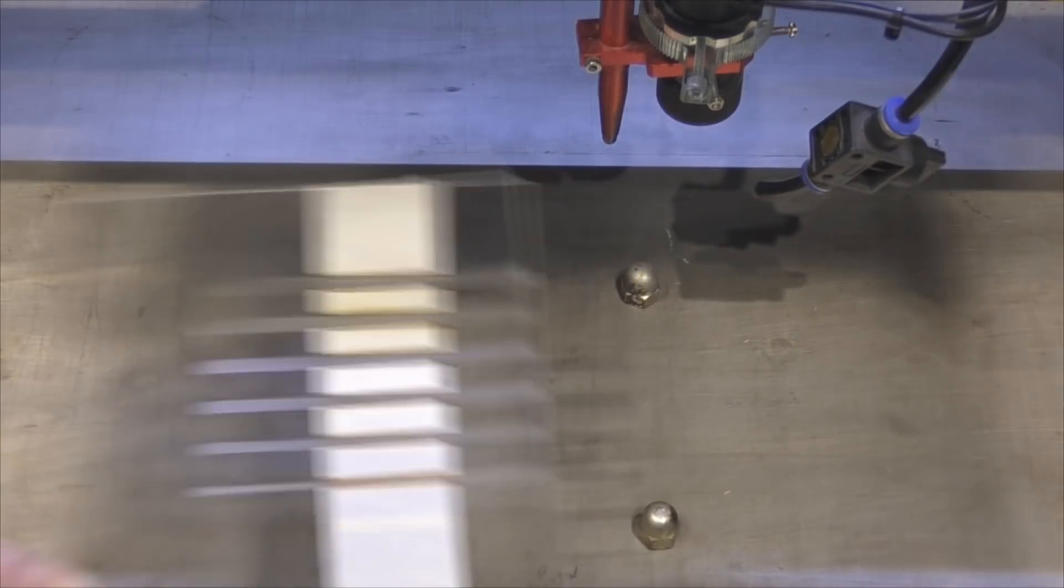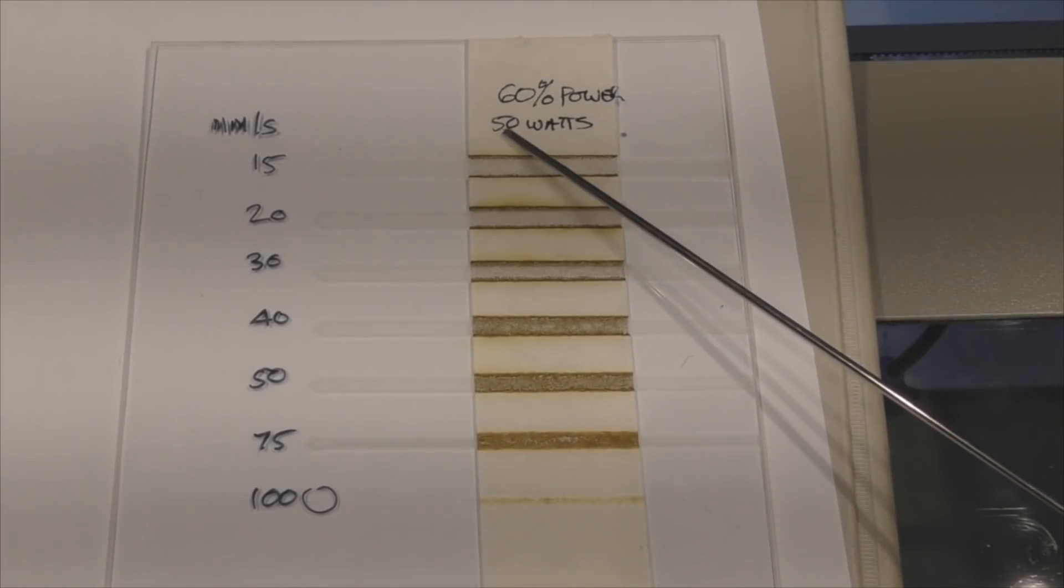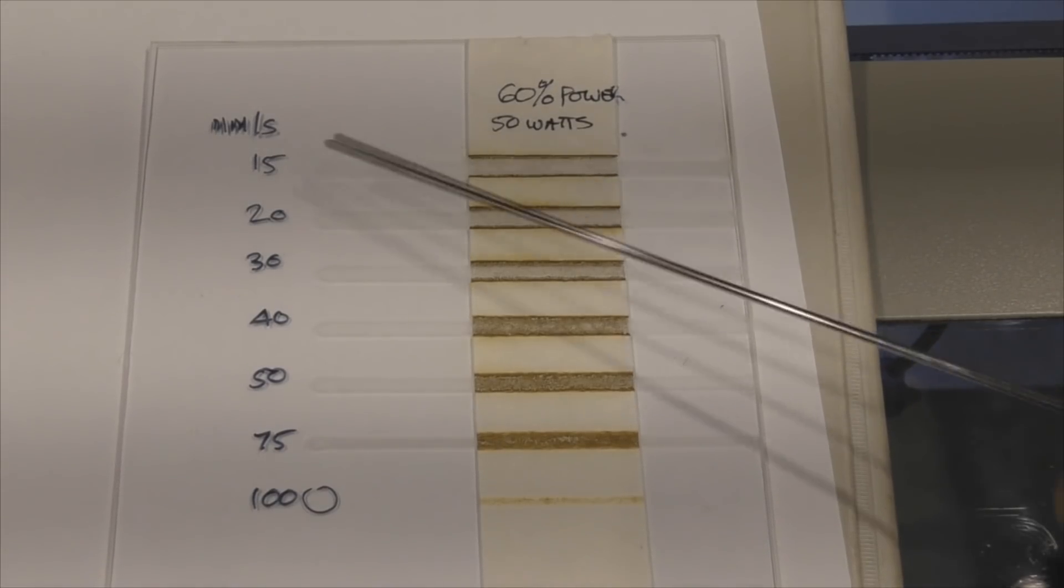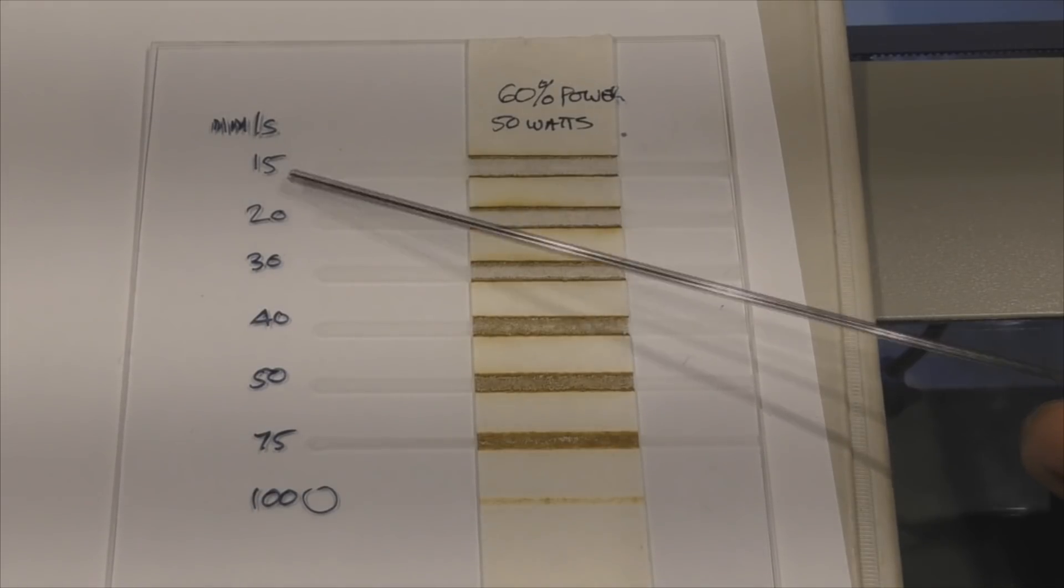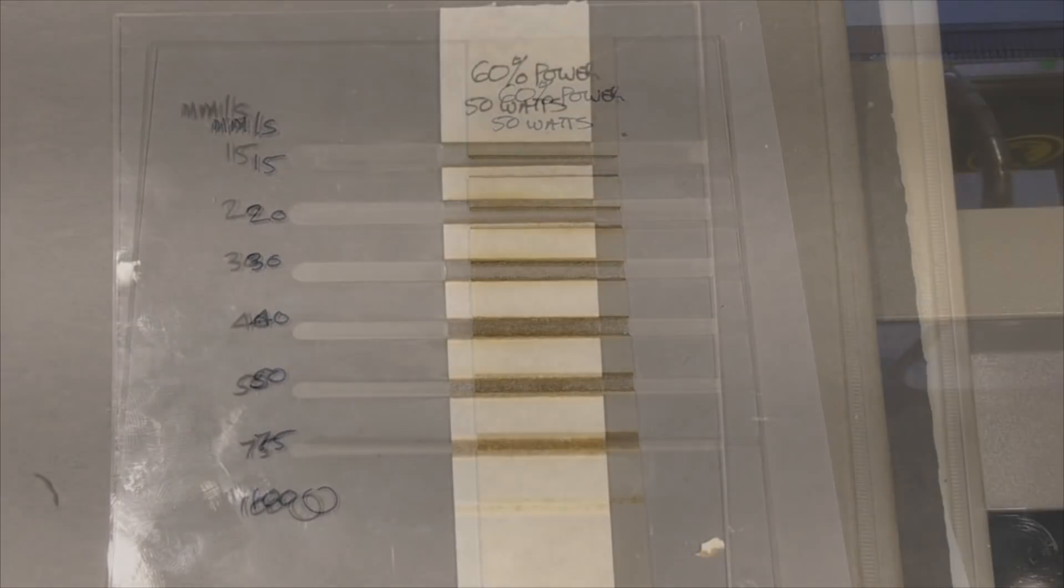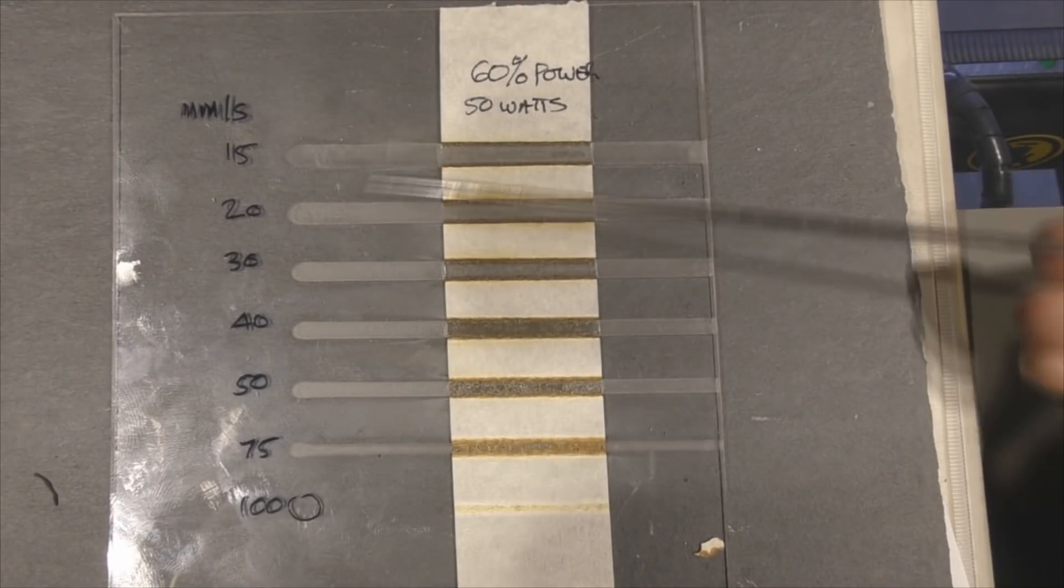Let's take a good look at these results, should we? Okay, well, as I said, we were using 60% power, which basically means that what we had coming down onto this work surface here was something like about 50 watts. And then we were running this at 15, 20, 30, 40, 50, 75 and 100 millimetres a second.